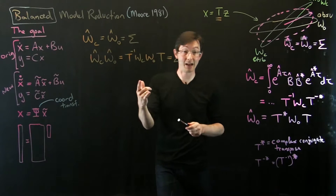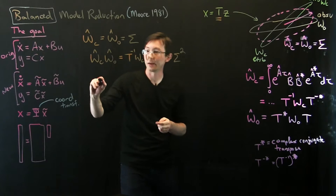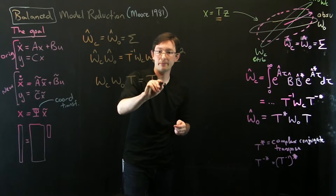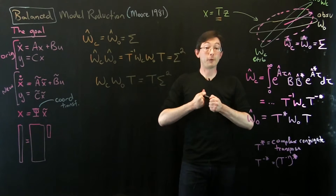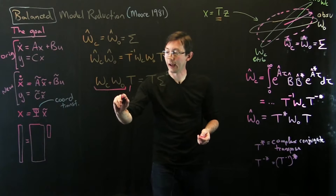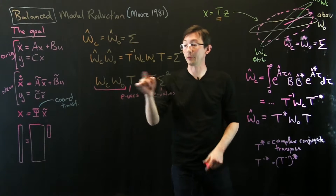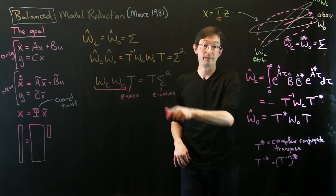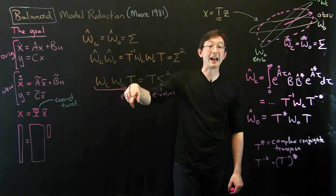For the last step, left-multiplying by T to eliminate T_inverse gives Wc · Wo · T equals T · sigma_squared. This should look very familiar — it's the formula for eigendecomposition. Wc · Wo is the big matrix, T contains the eigenvectors, and sigma_squared contains the eigenvalues. Notice the eigenvalues are always non-negative since they equal sigma_squared, so sigma_squared is a diagonal matrix of non-negative eigenvalues of the product Wc · Wo.